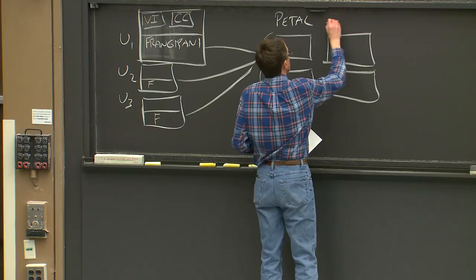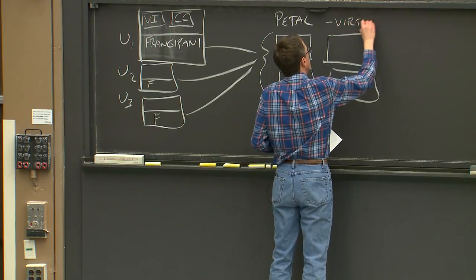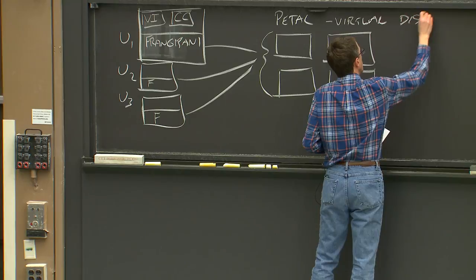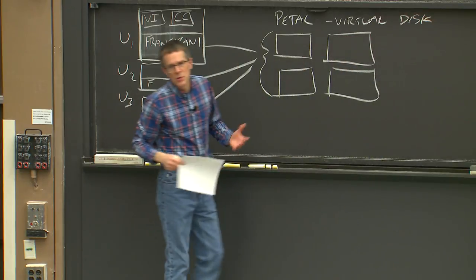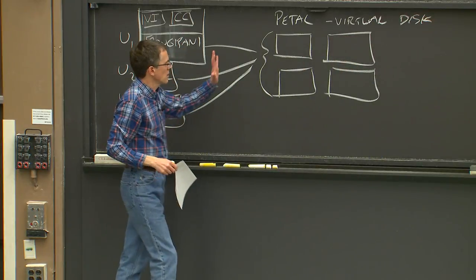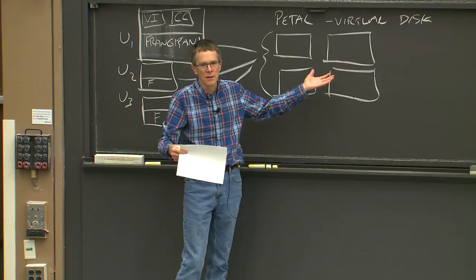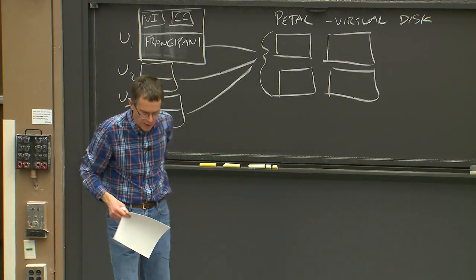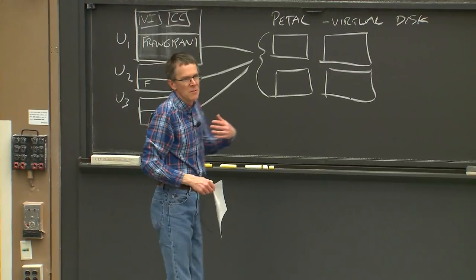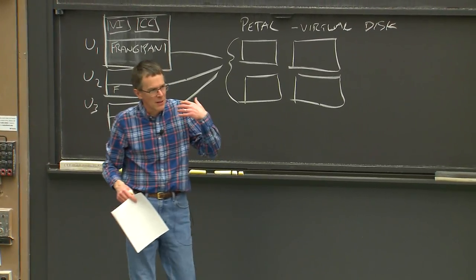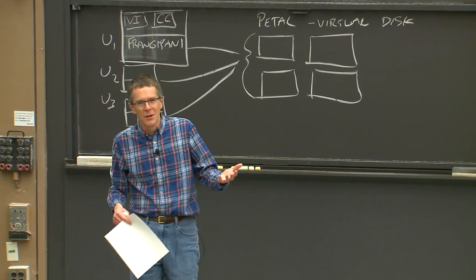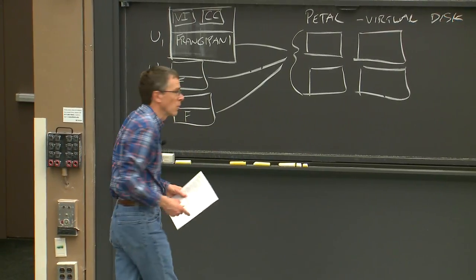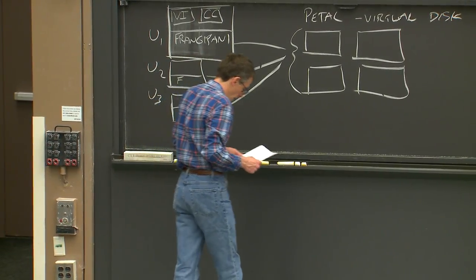Petal is called a virtual disk. For most of this discussion, we'll just imagine Petal as a disk drive used over the network by all these Frangipani instances. You read and write it by giving it a block number or an address and saying you'd like to read that block — just like an ordinary hard drive.